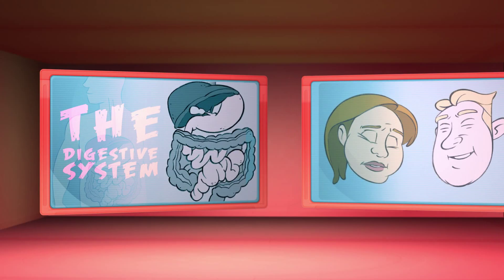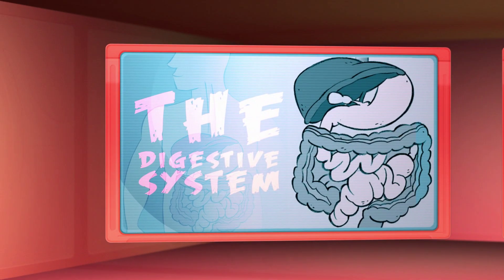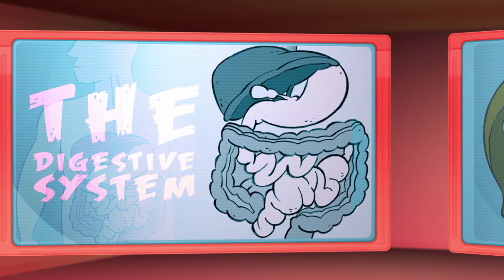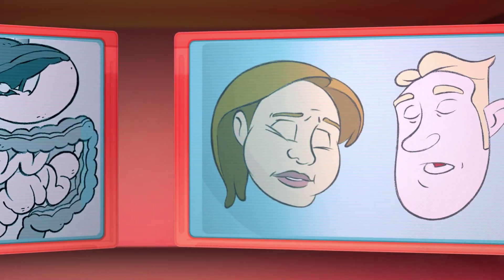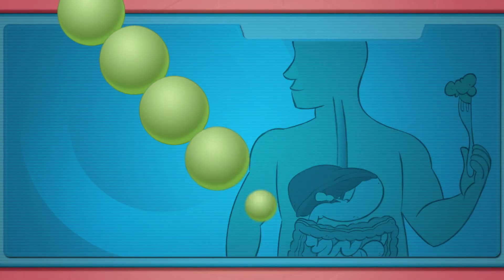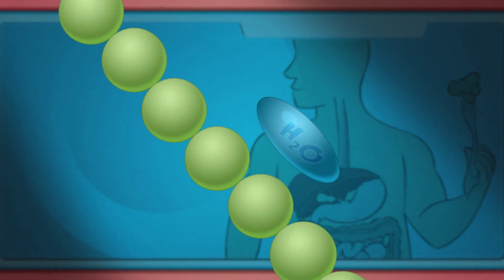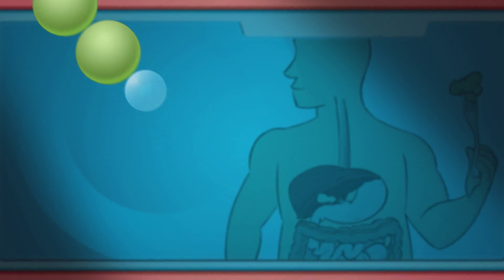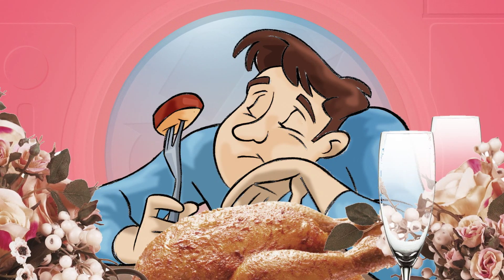The digestive system is elegantly simple yet mind-boggling in its speed, efficiency, and complexity. Best of all, after you swallow your food, this amazing disassembly line is totally involuntary, and all the chemical reactions involved in digestion are variations of the same type of reaction: hydrolysis. So the next time you eat, think about how the breakdown of food is so elegantly simple, no matter what type of food you're eating.